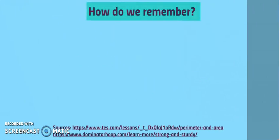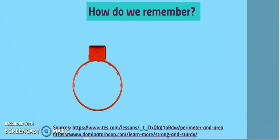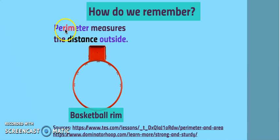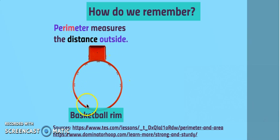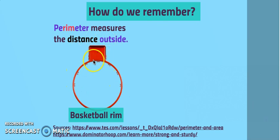Now we have that down. Another way to remember perimeter is to think of the word rim in the word perimeter. Think of a basketball rim. Every time we talk about the basketball rim, we're talking about this outside circle right here. Perimeter measures the distance outside. When you think of the word perimeter, think of the word rim.